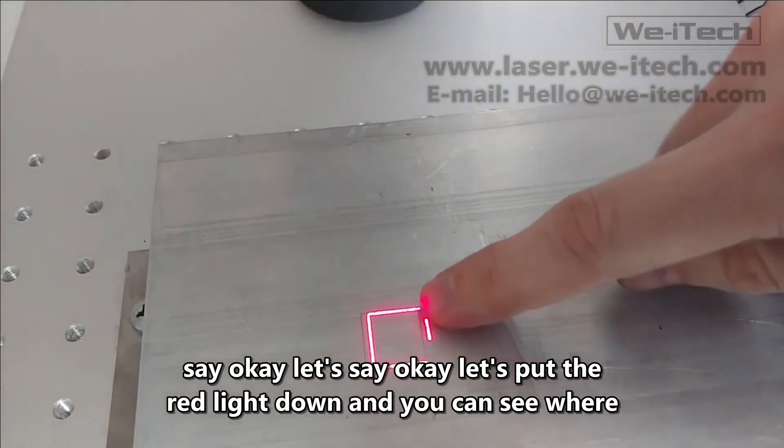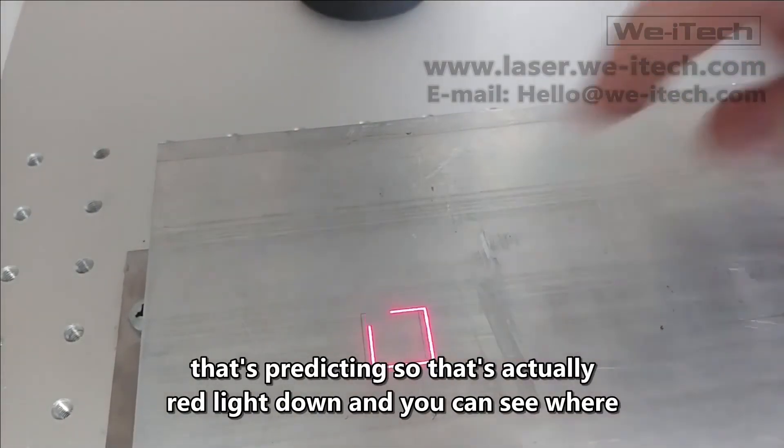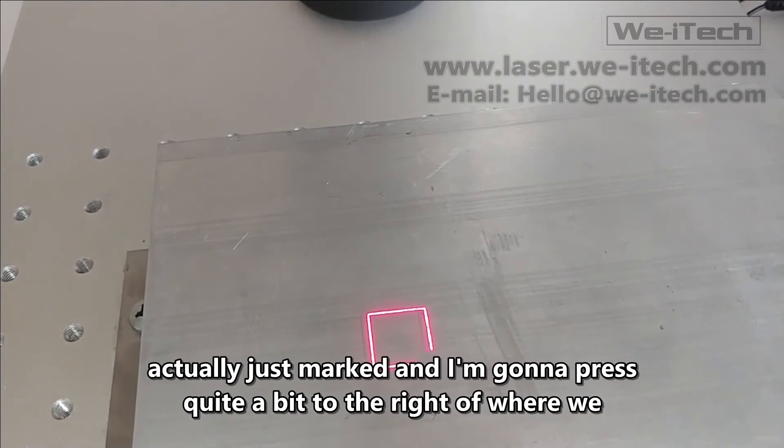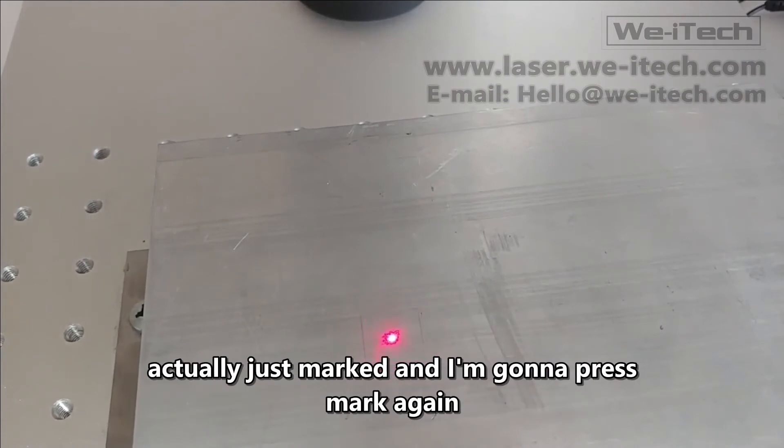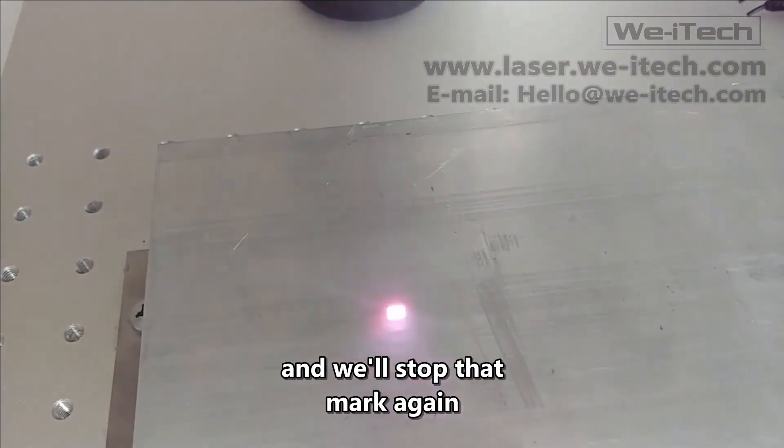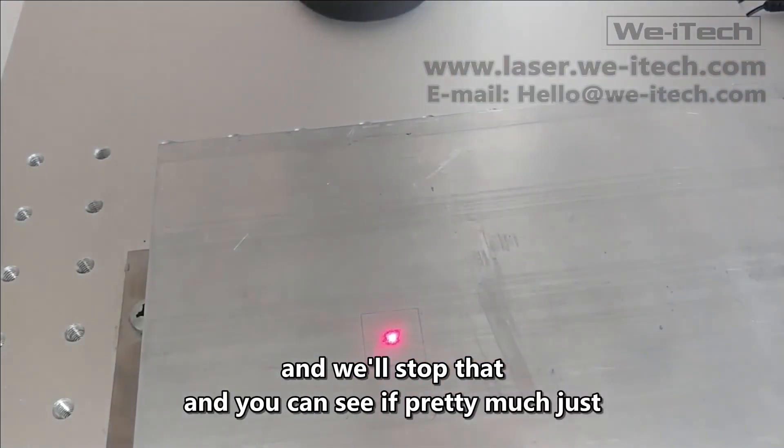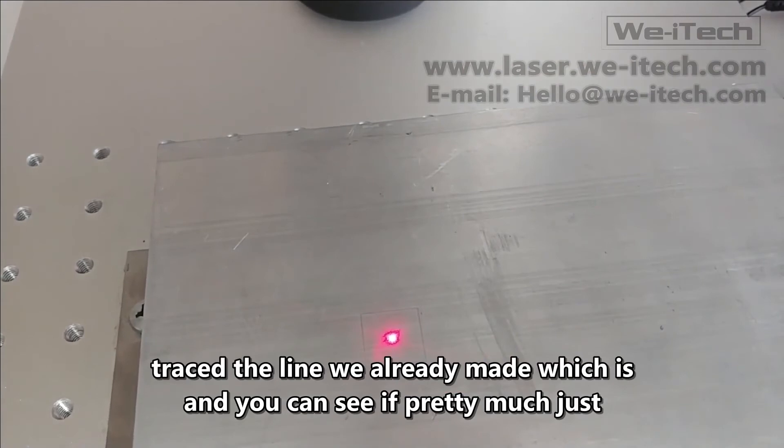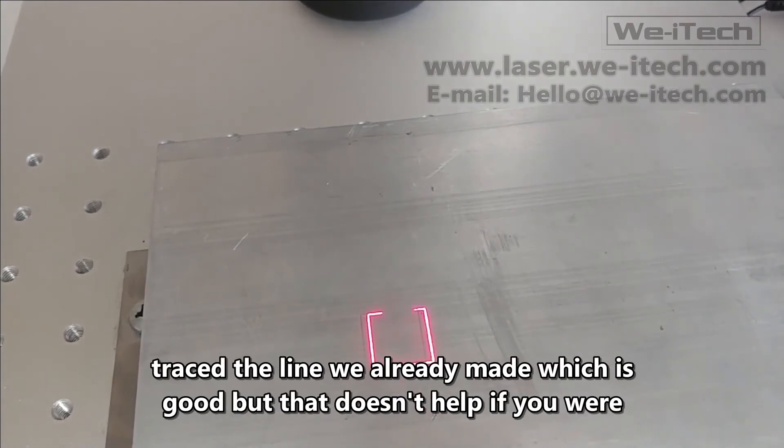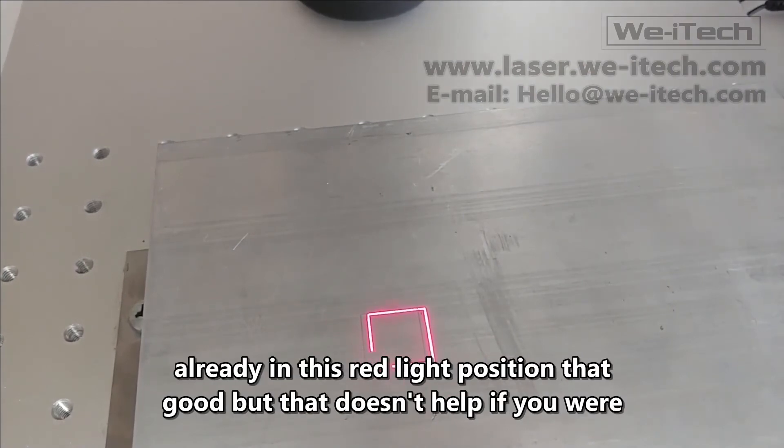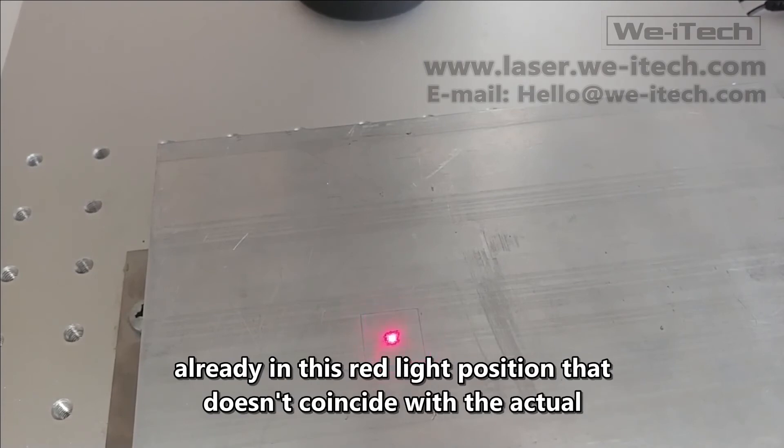Let's put the red light down, and you can see where that's predicting. So that's actually quite a bit to the right of where we actually just marked, and I'm going to press mark again, and we'll stop that. And you can see it pretty much just traced the line we already made, which is good.